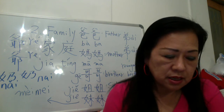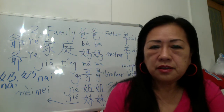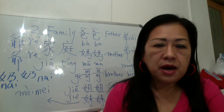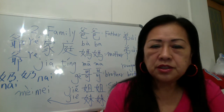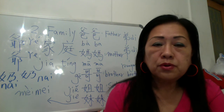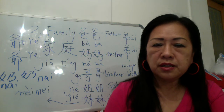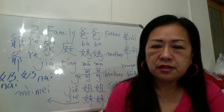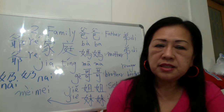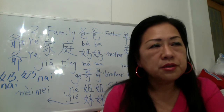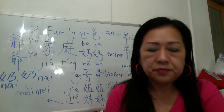The particle 的 is possessive. My father: 我的爸爸. My mother: 我的妈妈. Teacher's student: 老师的学生. We use 的 a lot — 我的, 你的, 他的, 她的. It's like apostrophe-S in English — belongs to someone.